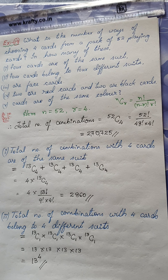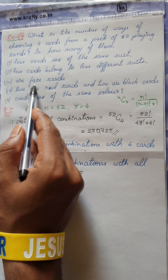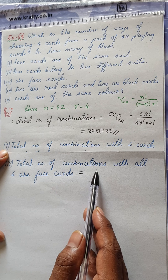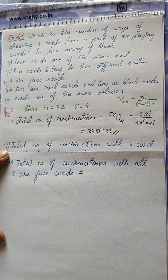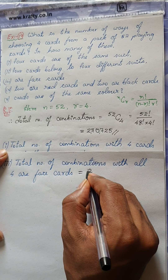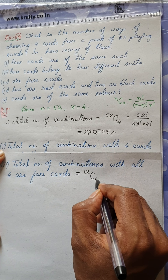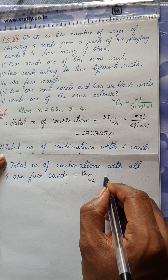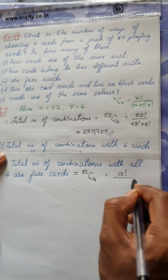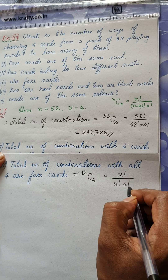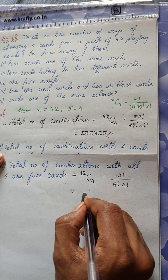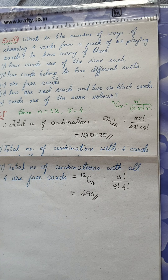Third condition — all four cards are face cards. There are 3 face cards per suit × 4 suits = 12 face cards total. Selecting any 4 from 12 face cards = 12C4 = 12! / (8! × 4!) = 495 combinations.